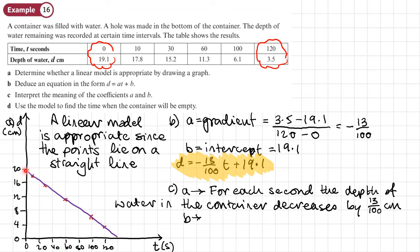And then we want to interpret B. So B is the intercept. It's this value here. It's the value of the depth of water when T is 0. In other words, the initial depth of water in the container before the hole was made.